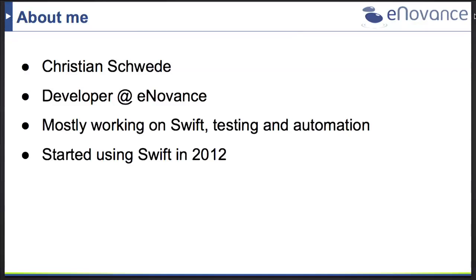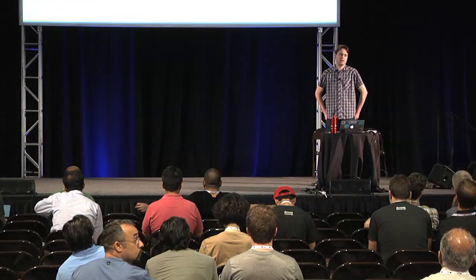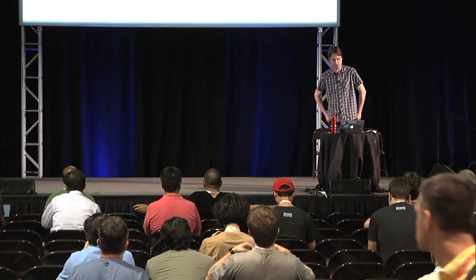I started using Swift at the end of 2012, and at that time I was evaluating different object storage solutions for my former company. One of these solutions was OpenStack Swift, and I was very happy with it because of the flexibility of Swift itself. But unfortunately one key feature was missing that we needed, and that was quota support at the end of 2012.